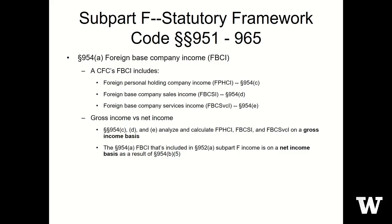There are three categories. First, foreign personal holding company income, which is for the most part your passive-type income — dividends, interest, royalties — and we'll look a little bit more at that in another slide.